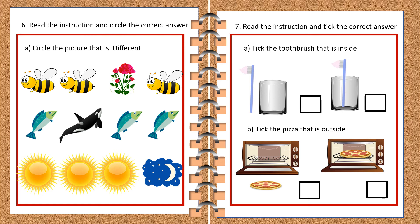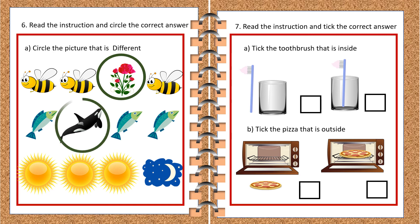Let's move on to another activity. This activity says circle the pictures that are different. The first line has a different image of a flower — the rest are honeybees. In the second line, it's a black fish which is a whale — that's the different one. In the third line, the other three images are of the sun, so they are same — the moon is different.